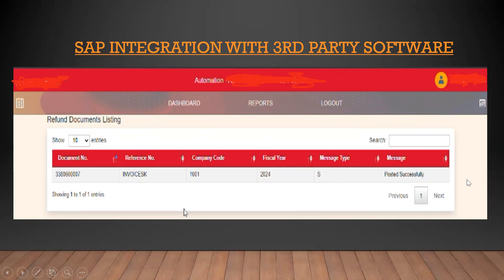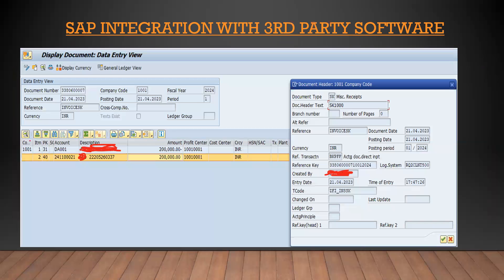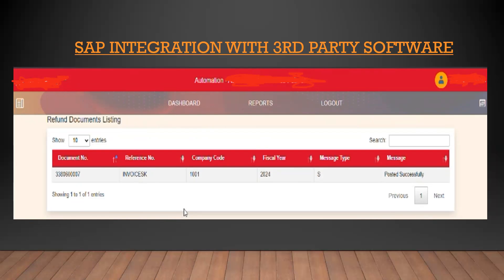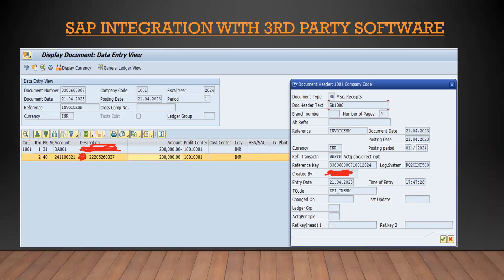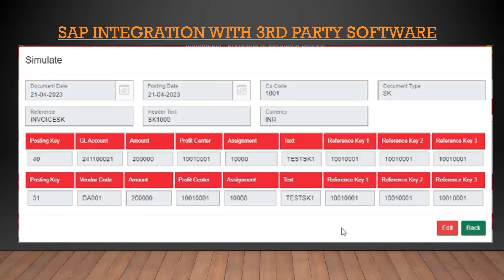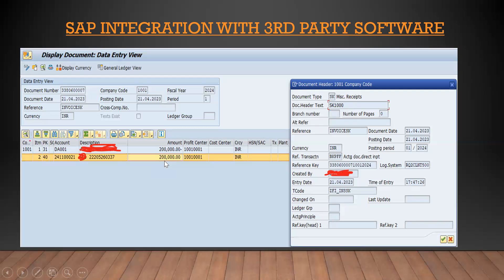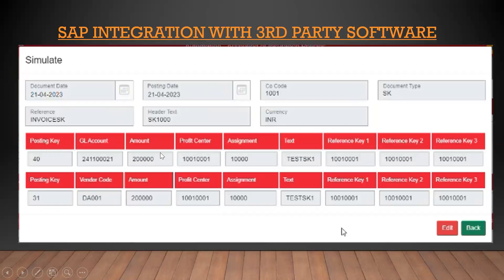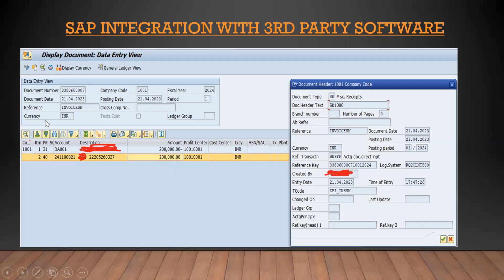Now going to the SAP screen, the document has been posted as shown — document number 33806. You can see the company code, fiscal year, posting date, reference, document header text, and document type. Referring back to the slide: document type is 21, company code SK1000, invoice SK, vendor DA0001. The vendor and GL account with the amount of two lakh rupees has come through. All the data and dates have come through correctly. This is getting posted with the help of the BAPI and the data is coming in JSON format through the API, directly posting in real time.